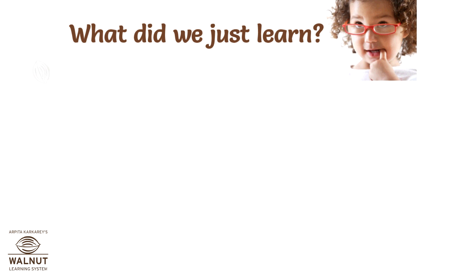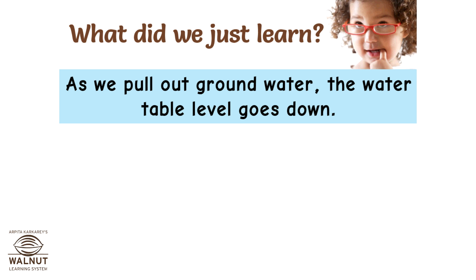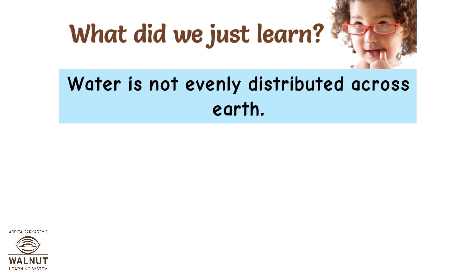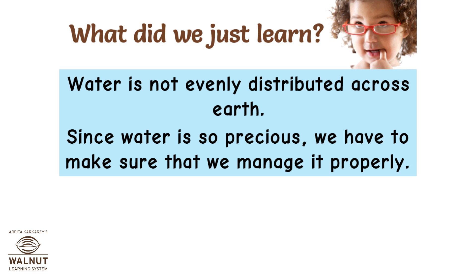So what did we just learn? As we pull out groundwater, the water table level goes down. Since the rate of recharging of the water table is lower than the rate at which we are using it, the water table level is going lower and lower. Water is not evenly distributed across earth, and since water is so precious, we have to make sure that we manage it properly.